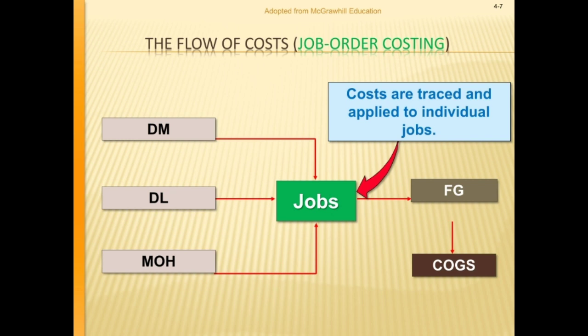Specifically, in job order costing, we accumulate direct material, direct labor, and manufacturing overhead to each job. Each cost is traced and applied to individual jobs. When these are finished, they move to finished goods. When sold, they transfer to cost of goods sold.